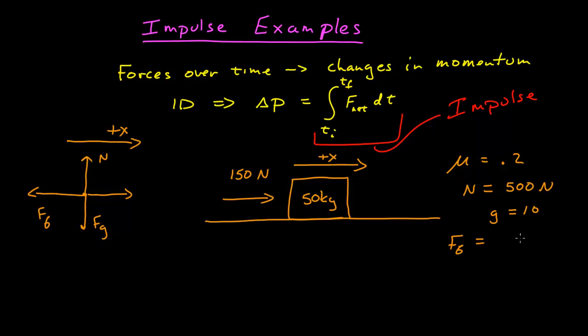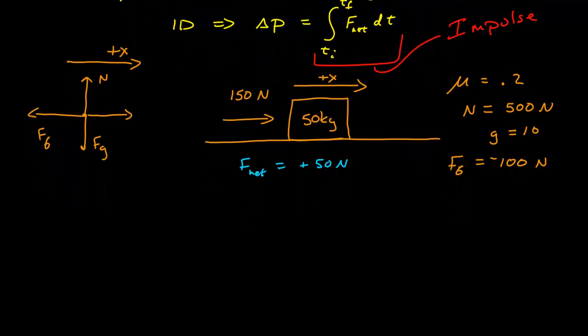is equal to 100 Newtons, 500 times 0.2, 100 Newtons, and it's in the negative x direction. And so our net force then is going to be a positive 50 Newtons. So let's say I'm pushing on this box with 150 Newtons for 5 seconds. What does that mean in terms of impulse and its change in momentum?